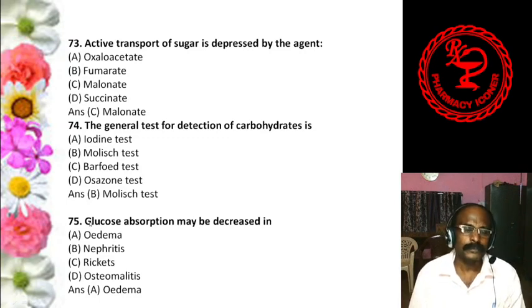Question 57: A carbohydrate found only in milk is — Glucose, Galactose, Lactose, or Maltose. The answer is galactose — galactose is the carbohydrate found only in milk.